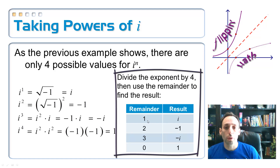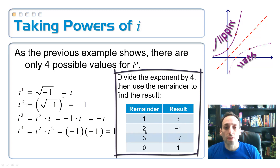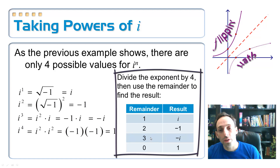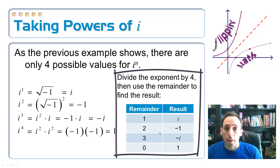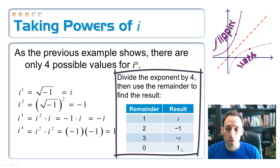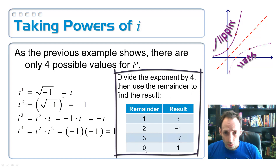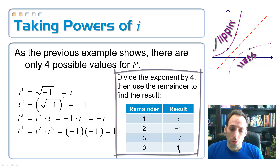If you have a remainder of 1, it's i to the 1st. If you have a remainder of 2, it's i squared, which is negative 1. If you have a remainder of 3, it's i to the 3rd, which is negative i. And if the remainder is 0, that means 4 goes in evenly — it's the same as i to the 4th, which is 1. Anything to the 0 power except 0 equals 1.